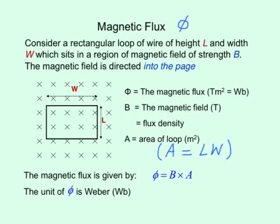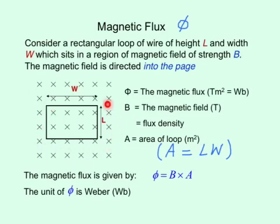Now let's look at the concept of magnetic flux, which is symbolised by the Greek letter phi (Φ). This is different from magnetic field, which is symbolised by B. Here we have a rectangular loop of wire sitting inside a magnetic field — these crosses mean the magnetic field lines are going into the page. The magnetic flux Φ equals the magnetic field strength B times the area of the loop of wire, where area is simply length times width. The unit of magnetic flux is the Weber (Wb).